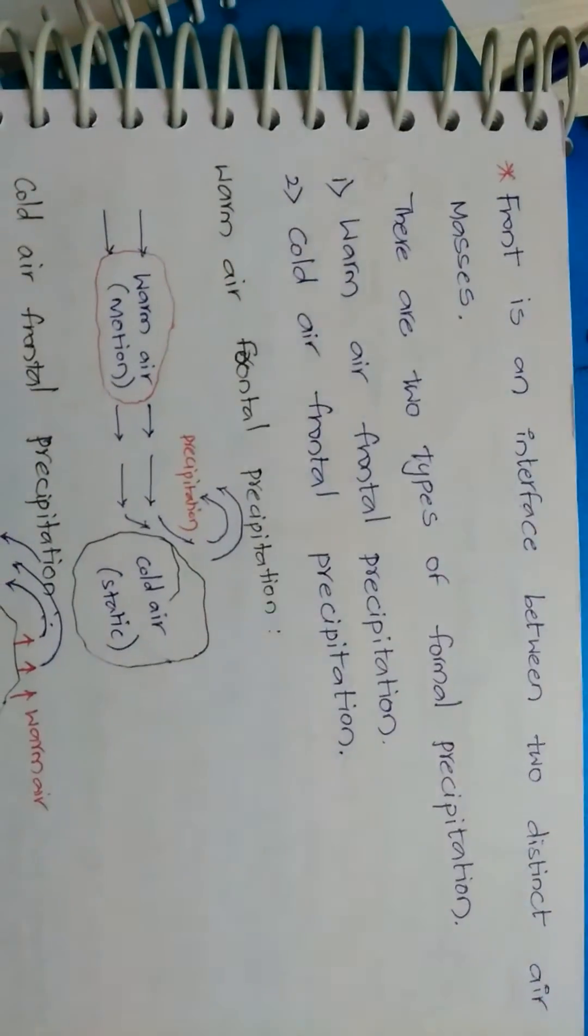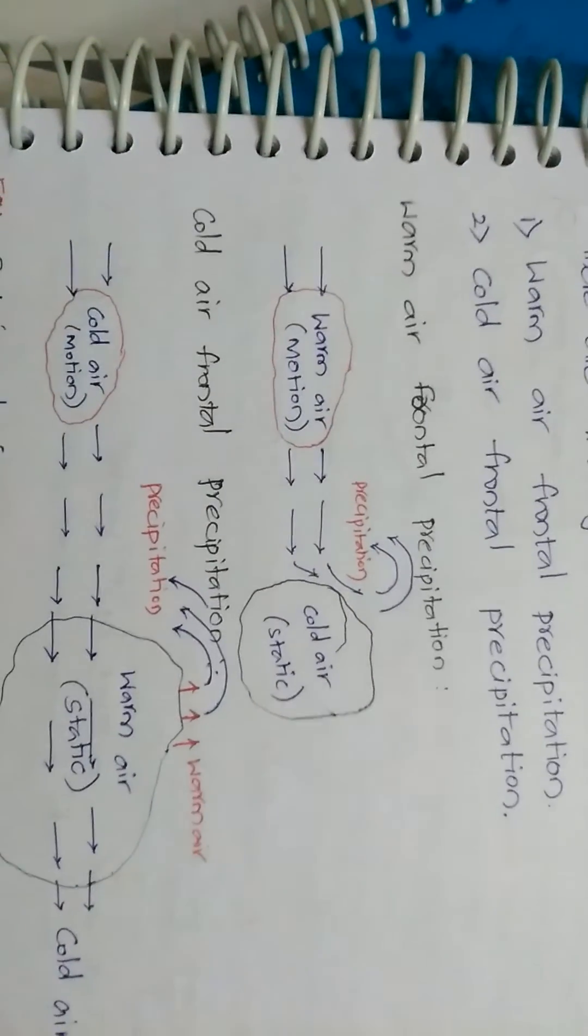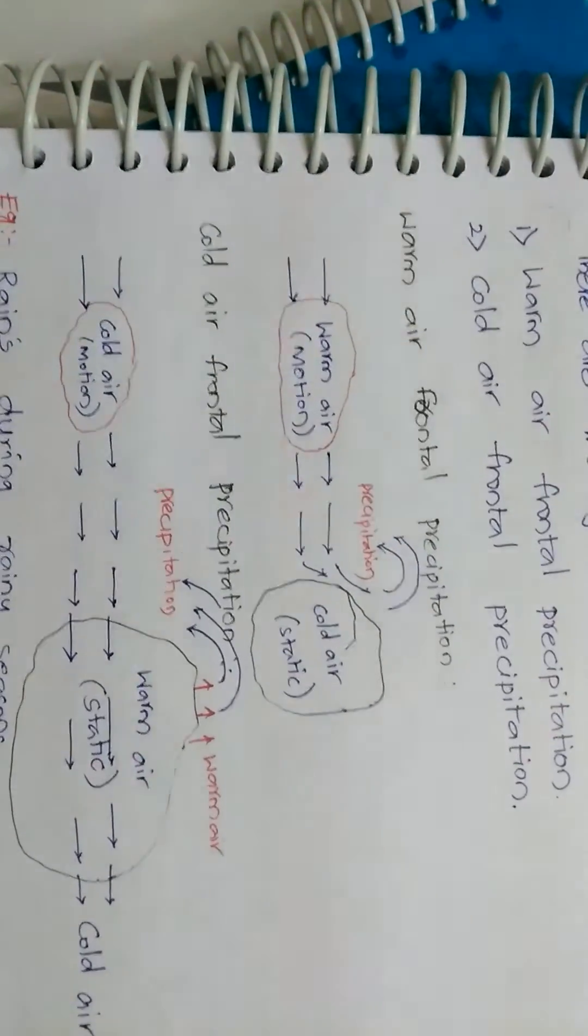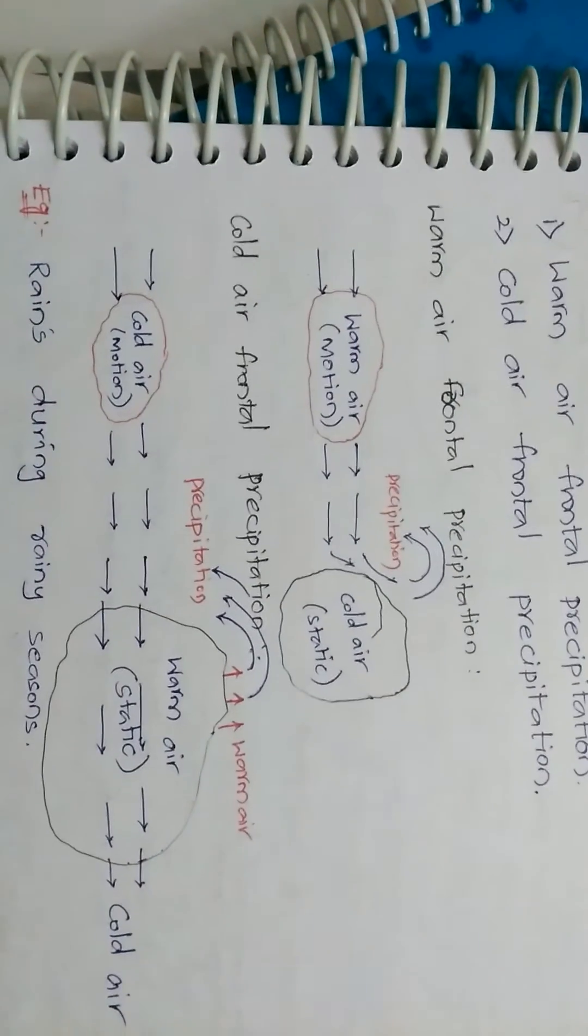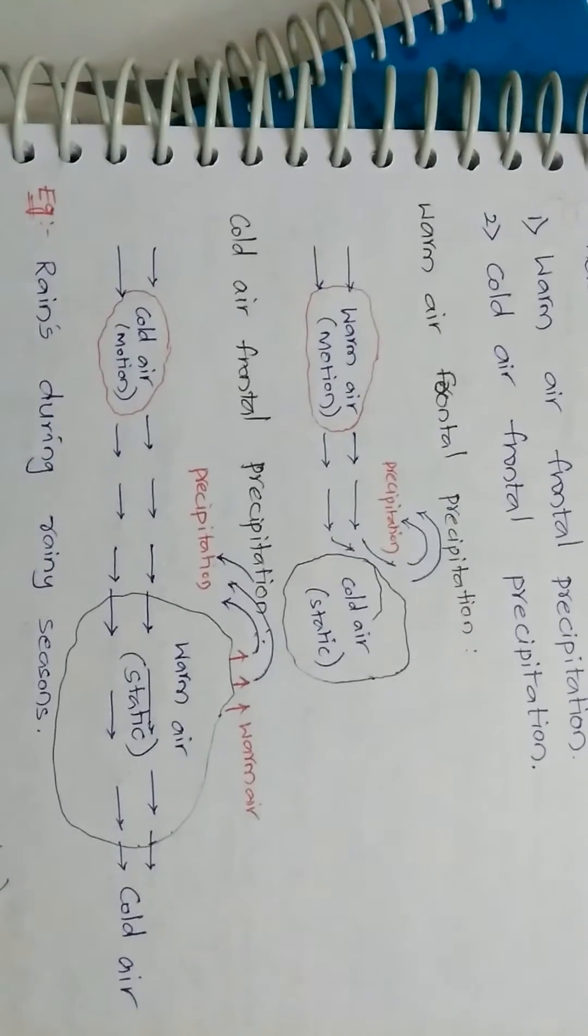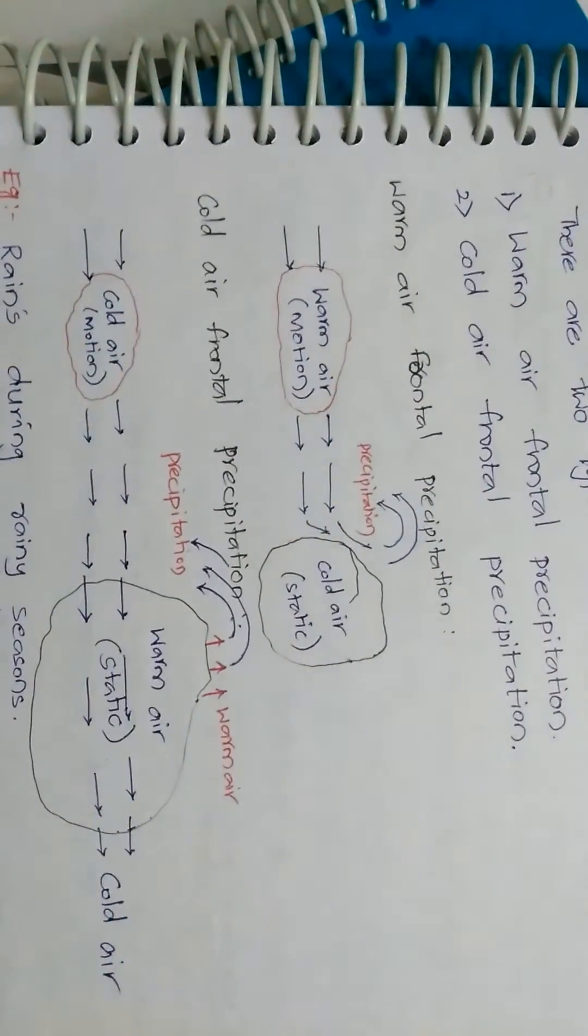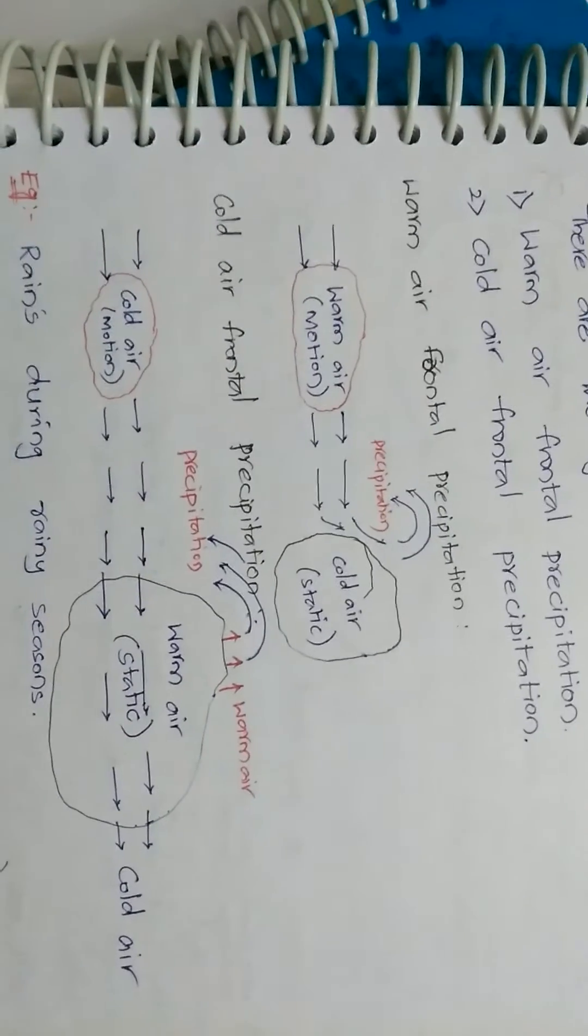Warm air front precipitation and cold air front precipitation. From the figure, we can know the warm air frontal precipitation. The warm air comes in motion and heats the cold air which is in the static state and the precipitation forms.